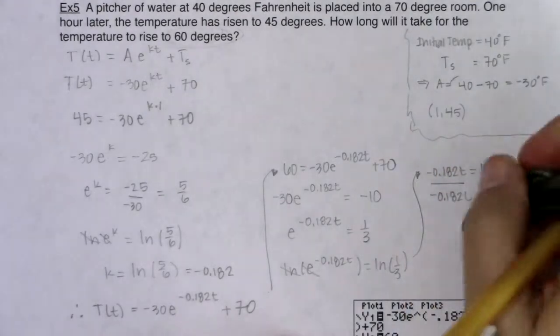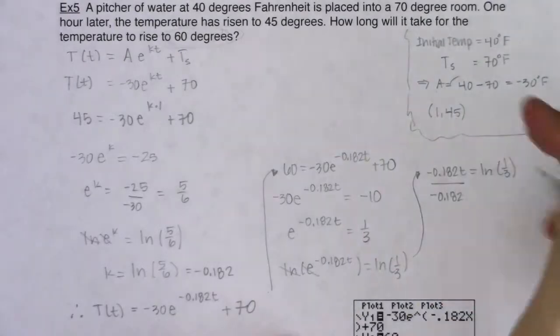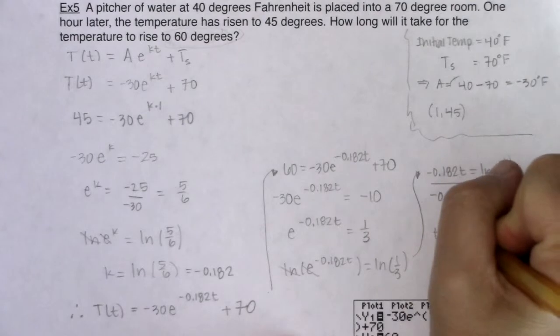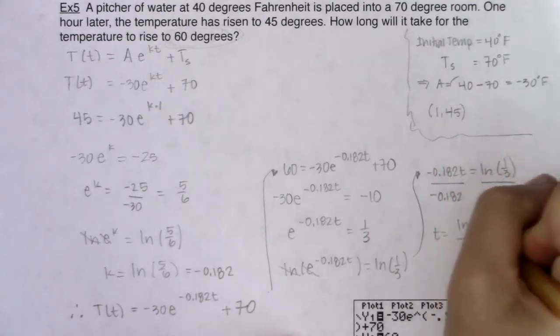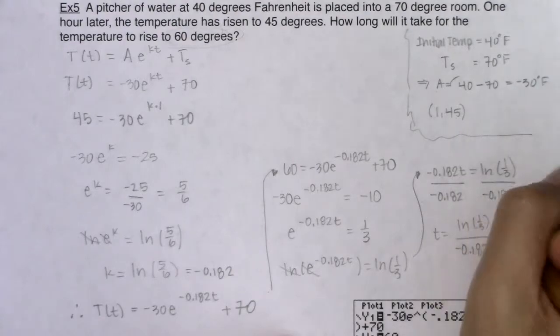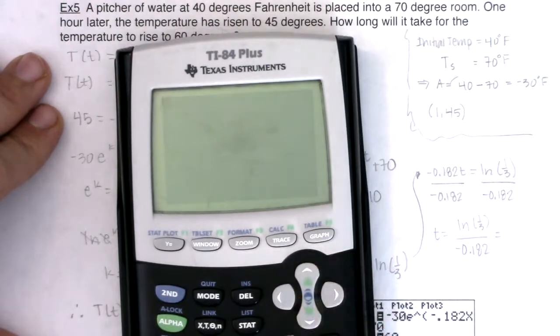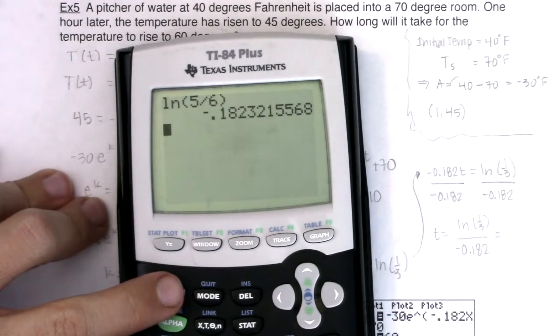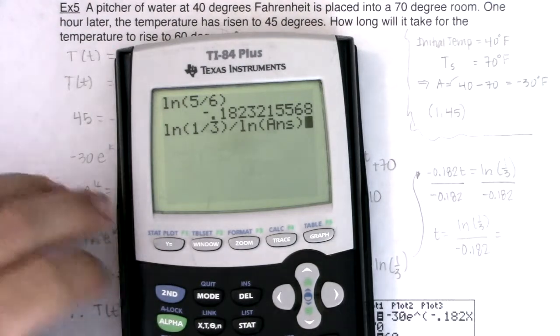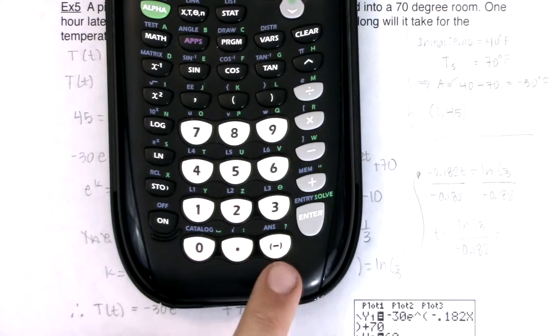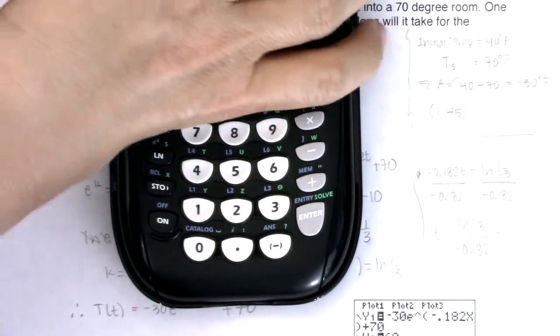I'm almost done. The last thing I need to do is divide both sides by negative 0.182. So t will be equal to whatever this number is. I'm definitely going to do this on my calculator. So we've got the natural log, actually, yeah. So I've got the natural log of one third and I'm going to float this decimal. I'm going to divide it by the natural log of that answer. And again, if you don't remember what answer is, if you look at your negative symbol, it's in blue above your negative symbol. So you would need to hit the second key.